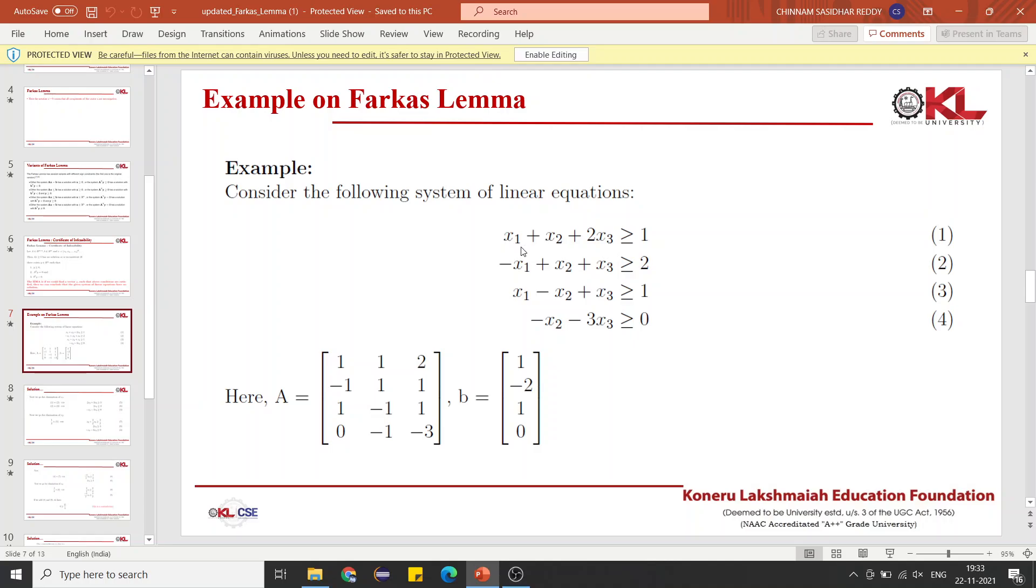See, you have 1x1, so 1, 1x2, so 1, and 2x3, so we write 2. Similarly we will write the matrix for all of these 4 constraints. Then B matrix. B matrix is derived from the constants in this equation. Here by mistake, 2 was written as minus 2, please ignore that.